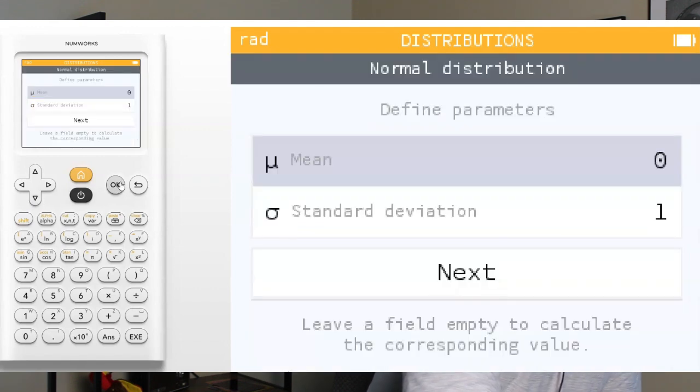So click on normal distribution and OK, and it's going to ask you for two things, to define the parameters, the mean of your population and the standard deviation of your population. Now, one more time, you cannot use the normal distribution unless the problem specifically says that your data falls in normal distribution, which of course ours does.